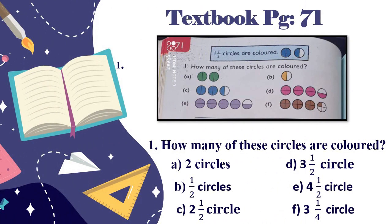In question number one, you have to write how many circles are colored. In number A, two circles are colored. In number B, half circles are colored. In number C, two and a half circles are colored. In number D, three and a half circles are colored. In number E, four and a half circles are colored. In number F, three and one fourth circles are colored.